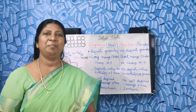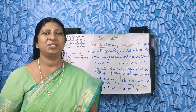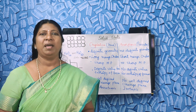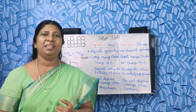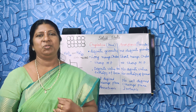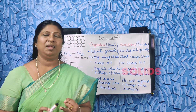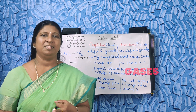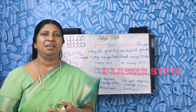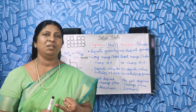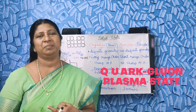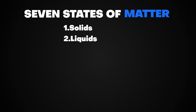In the first year, we learned about matter and different classifications. We learned about seven different states of matter: solids, liquids, gases, plasma state, Bose-Einstein condensate, Fermionic condensate, and Quark-Gluon plasma state. Of these states of matter, the three important states are solids, liquids, and gases.